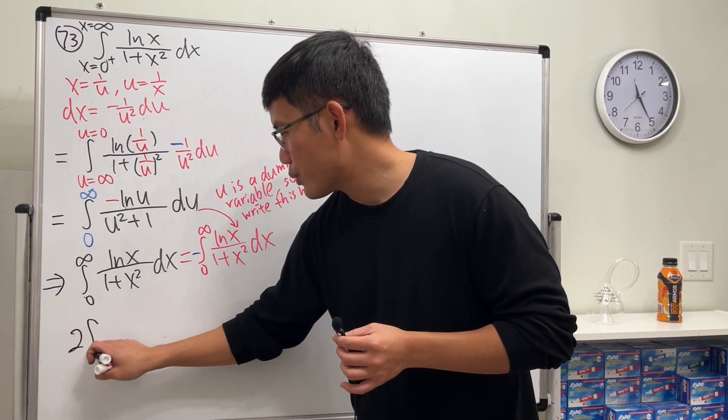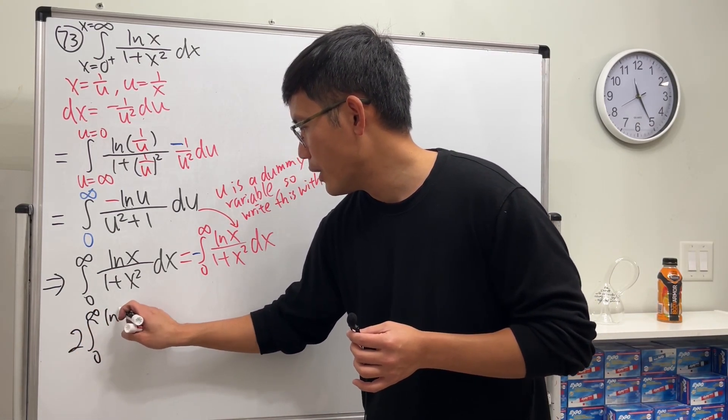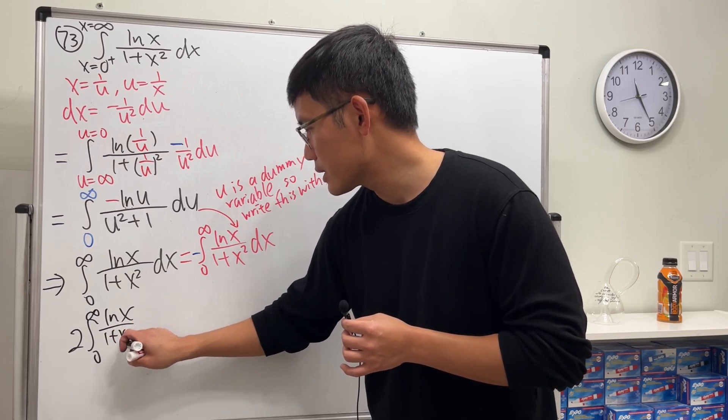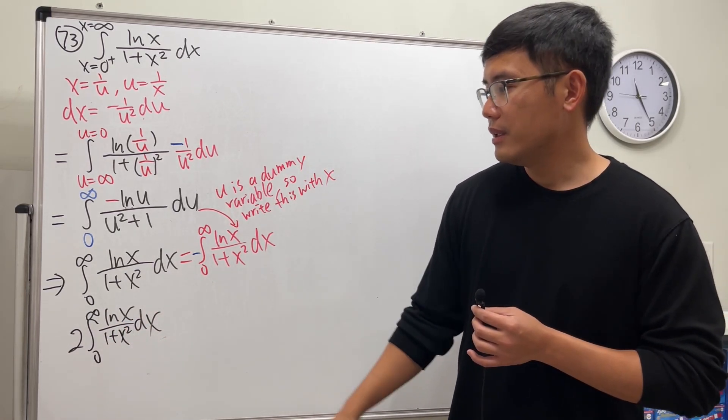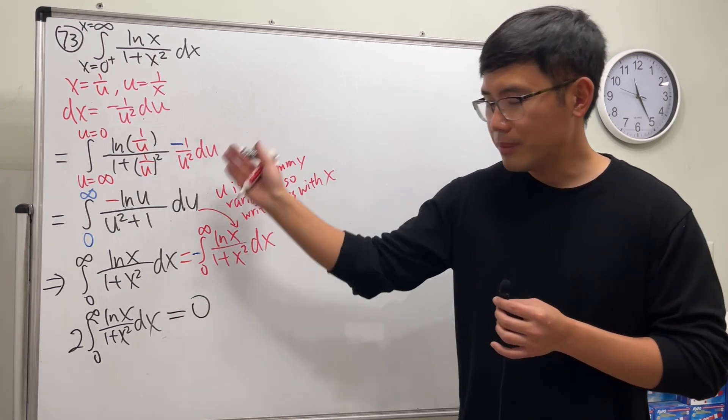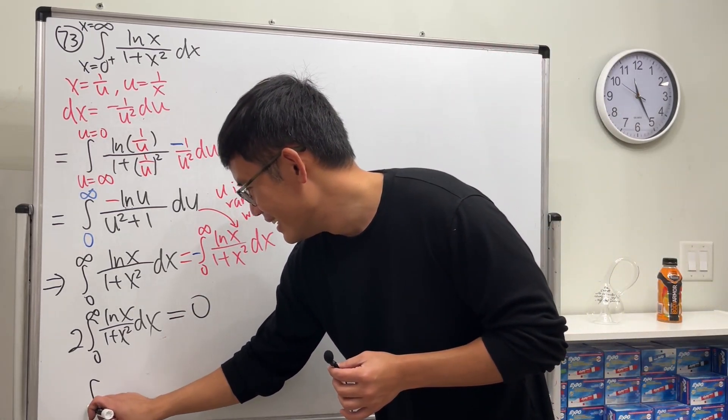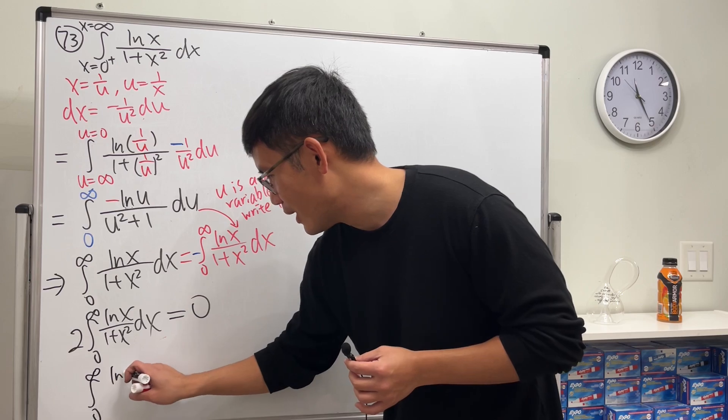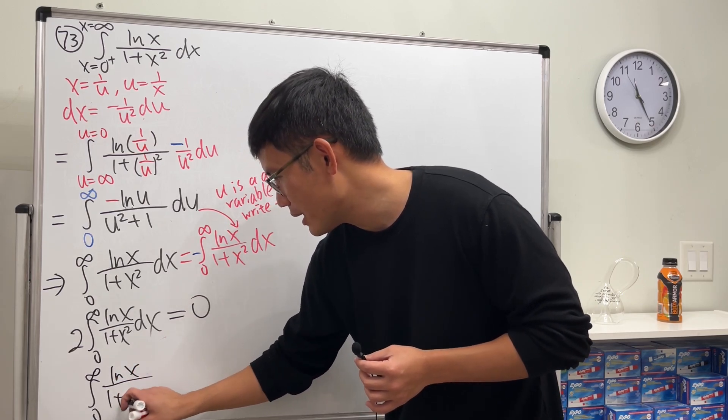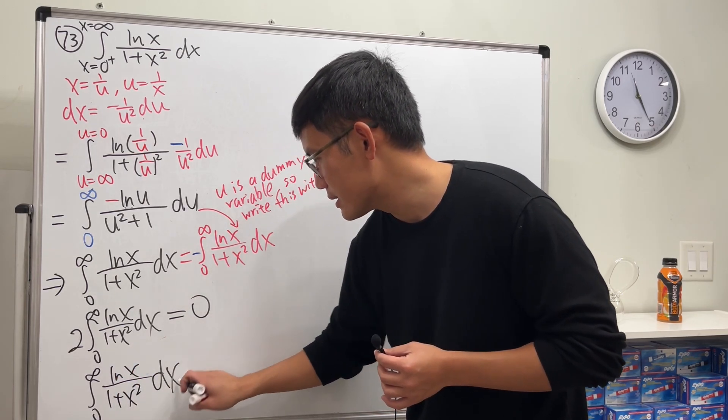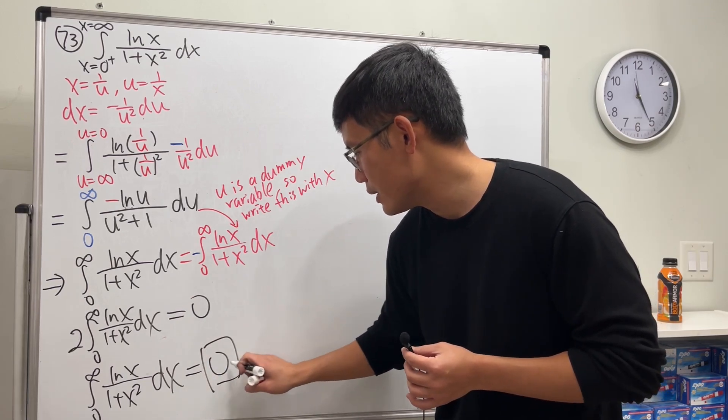2 integral 0 to infinity ln x over 1 plus x square dx you get 0. Divide 2 on both sides. The integral going from 0 to infinity ln x over 1 plus x square dx equals 0 and then we are done.